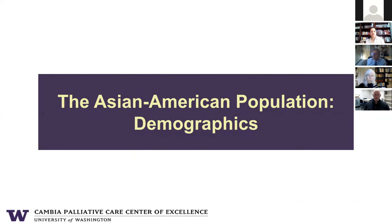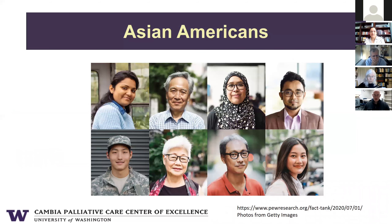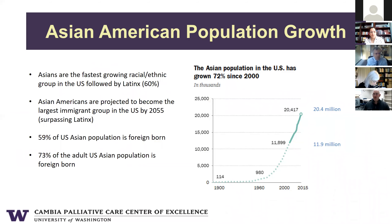Keeping those historical concepts in mind, let's now turn to the demographic characteristics of this population. Asian Americans are the fastest growing racial ethnic group in the U.S., followed by Latinx. Since 2000, the Asian population in the U.S. has grown 72%. Asian Americans are projected to become the largest immigrant group in the U.S. by 2055. 59% of the U.S. Asian population is foreign-born, and when looking at adults specifically, 73% of the adult U.S. Asian population is foreign-born.